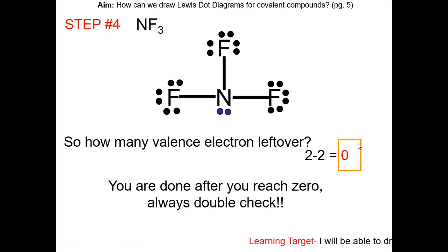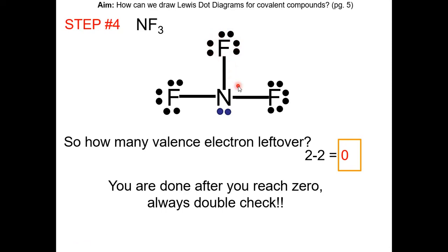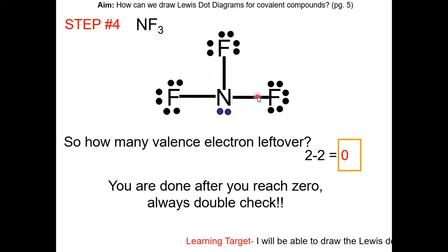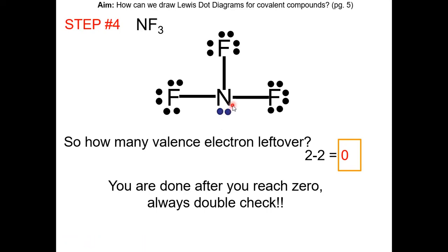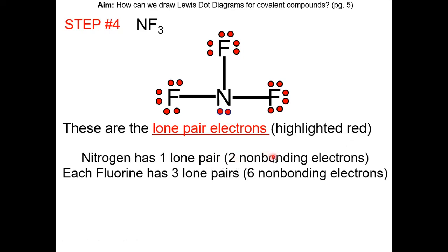Double-check your answer: we started with 26 total valence electrons, so count to confirm the molecule has 26 — and it does. Also check that each atom fulfills the octet rule. Each fluorine has six non-bonding electrons (three lone pairs) and is sharing two, giving eight total. Nitrogen has three bonds (six electrons) and one lone pair, so nitrogen fulfills the octet rule as well. In the final diagram, nitrogen has one lone pair and each fluorine has three lone pairs.